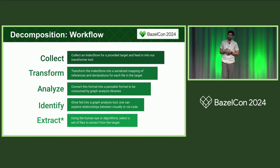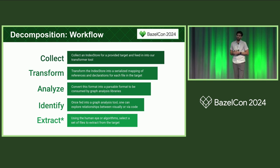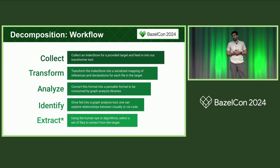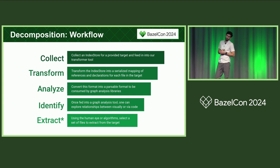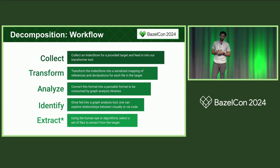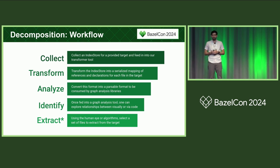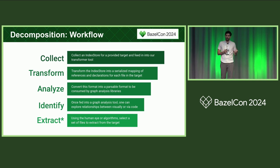Here's an overview of the workflow that we use internally to decompose monoliths. First, we use a custom rule to collect an index store — an artifact used by features such as indexing — from a target, and we feed it into a transformer. This transformer converts the index store artifact into a JSON mapping of references and declarations for every file in the target. After the transformer does its work, we then parse the output again and create a directed graph based on the references and declarations in every file.